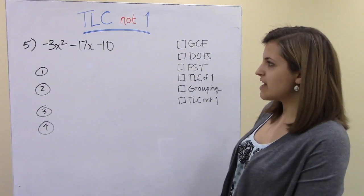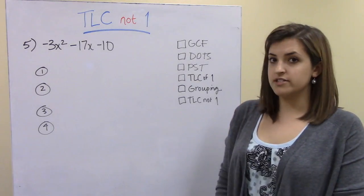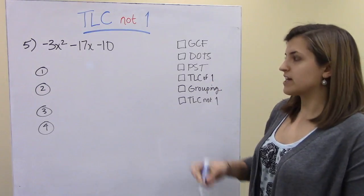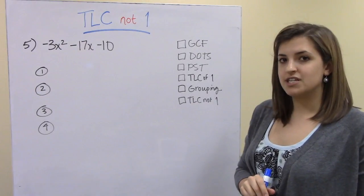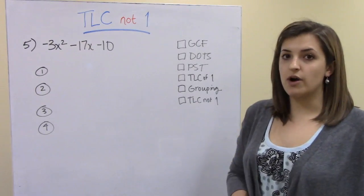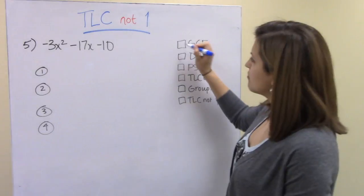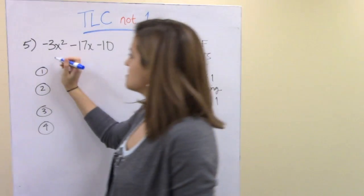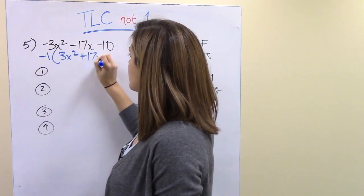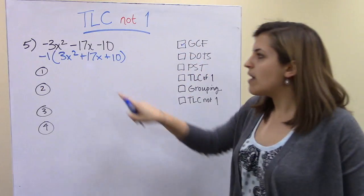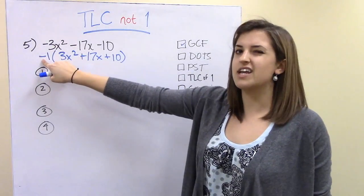In the final example, we have −3x² − 17x − 10. Going through the checklist: because the leading coefficient is negative, we want to factor out a negative 1 first — so this is partially a greatest common factor case. After factoring out −1, we have −1(3x² + 17x + 10), and we treat the trinomial inside using our method, keeping that negative 1 in mind.